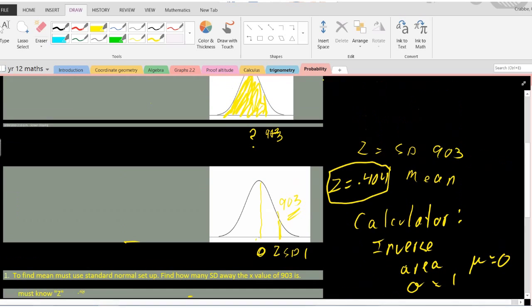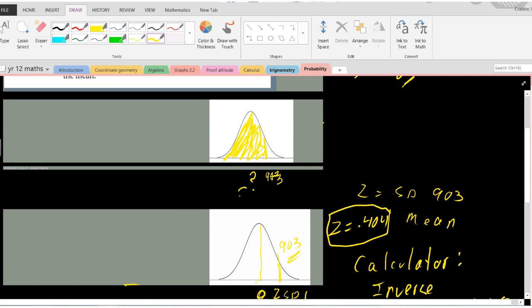If we go back to the graph it makes sense. This would be 896, that's our mean, and that's 903 on the other side of the mean, which makes sense for the question. That's how you do that kind of question.